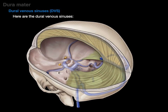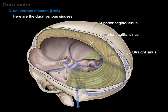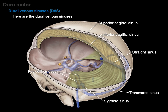Here are the dural venous sinuses in this posterior superior view: the superior sagittal sinus along the top of the falx cerebri, the inferior sagittal sinus along the bottom of the falx cerebri, the straight sinus right in the middle of our tentorium cerebelli, the transverse sinus horizontally along the posterior surface of the tentorium cerebelli, the sigmoid sinus — named because it's S-shaped — and the superior and inferior petrosal sinuses draining down to the transverse or sigmoid sinus. And there's our cavernous sinus, which I'll talk about in a second.